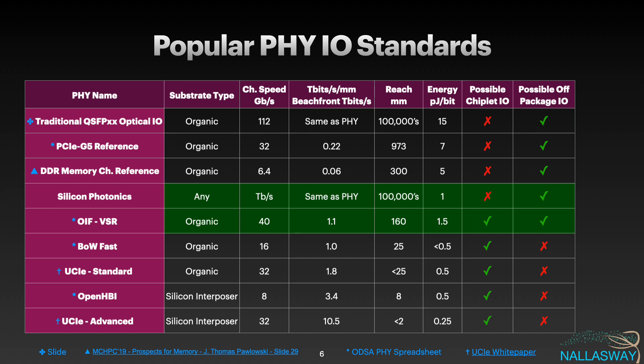Below the line we can see the emerging chiplet IO standards in the region of half a picojoule per bit and trying to go lower. In that green area, silicon photonics is giving us a massive reduction in energy over many hundreds of meters. There's also this OIF very short reach standard, which can connect up to 160 millimeters at just one and a half picojoules per bit — and this is what I believe has the potential to be our off-package chiplet PHY for the industry to standardize around.